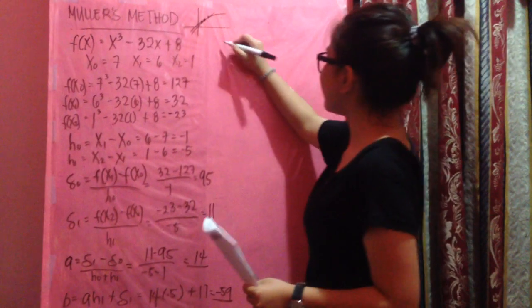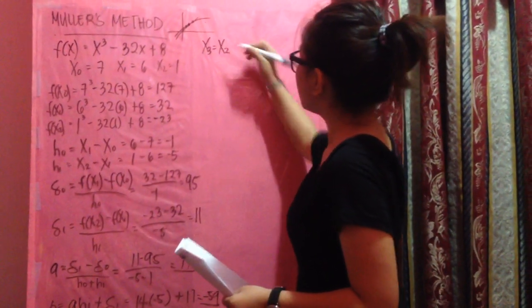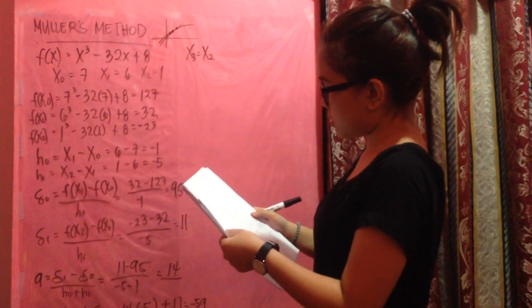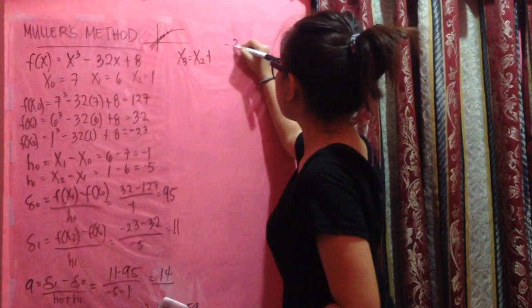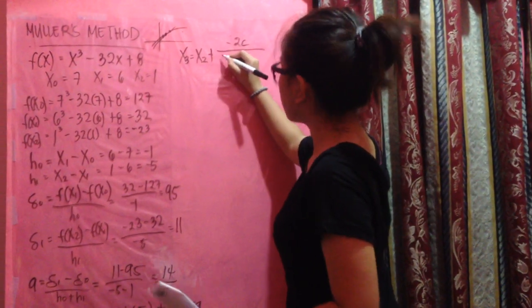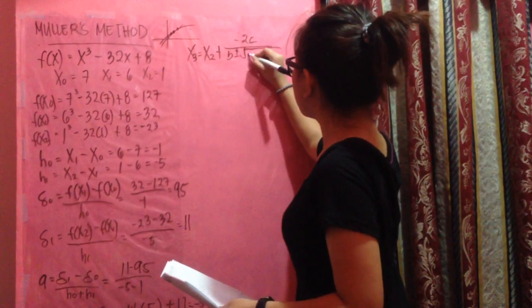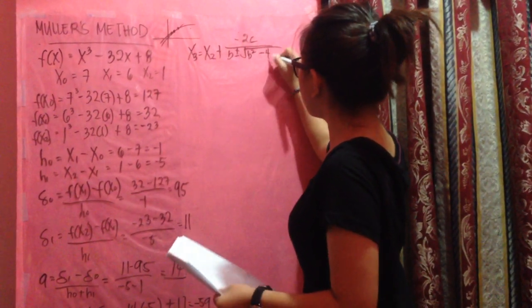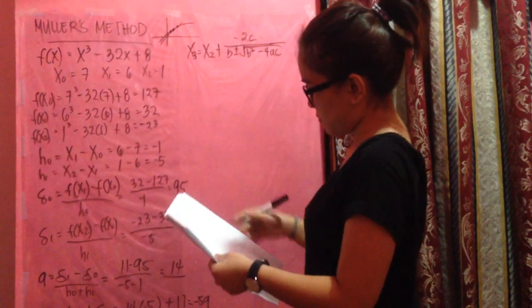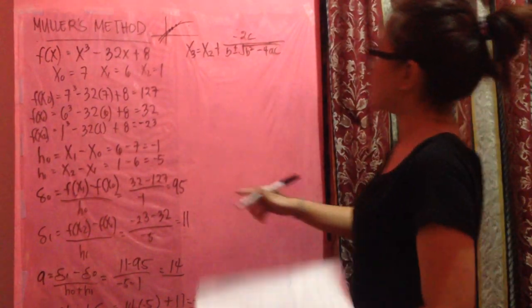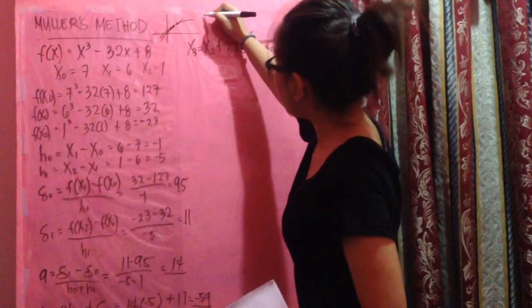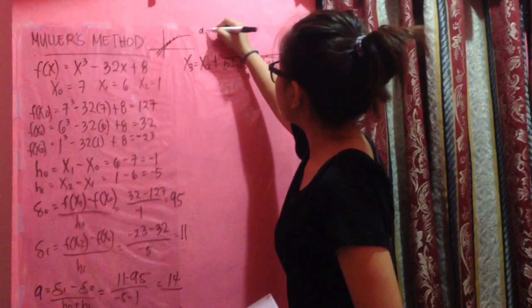x₃, which is equal to x₂ plus negative 2C over B plus minus squared of B squared minus 4AC. Substitute A, 14, B, negative 59, and C, negative 23.